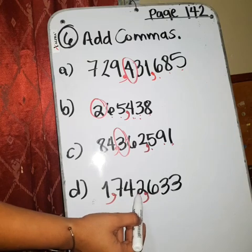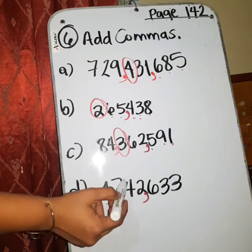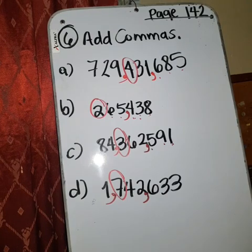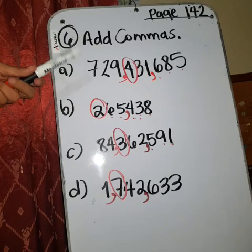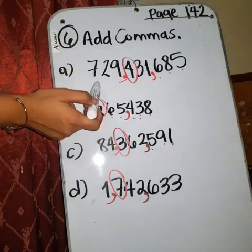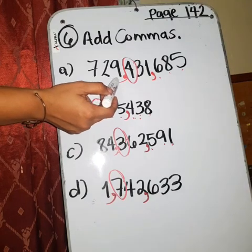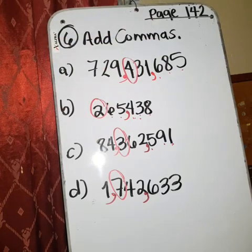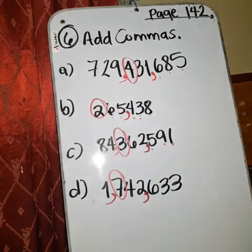Can you read this number, this digit? Pueden leerlo. Seven hundred twenty-nine million four hundred thirty-one thousand six-hundred eighty-five. That is a lot, right? You need to practice to read numbers like that. Tienen que practicar a leer números así de grandes, but in English, not in Spanish. In English.